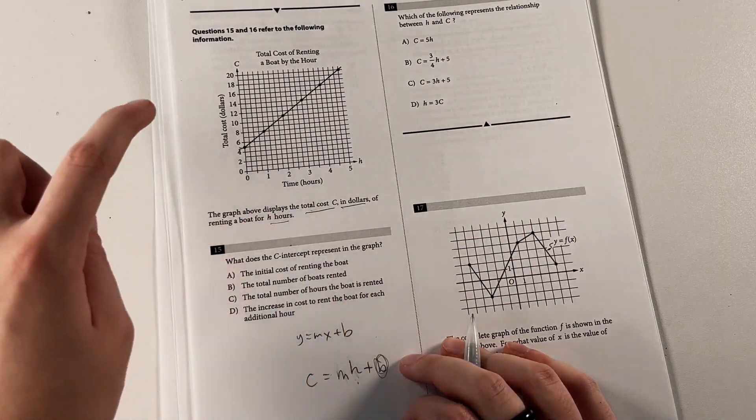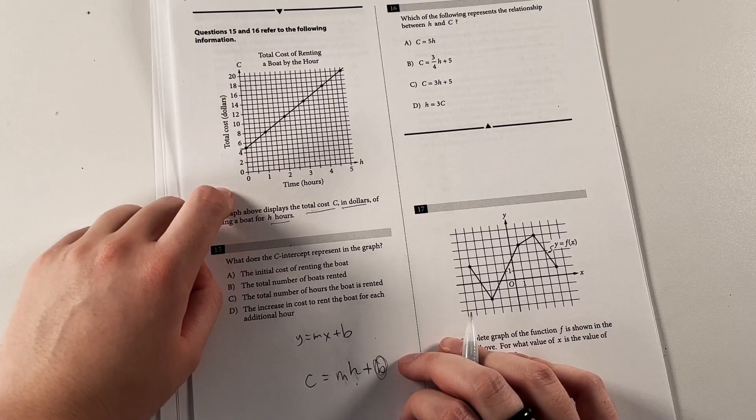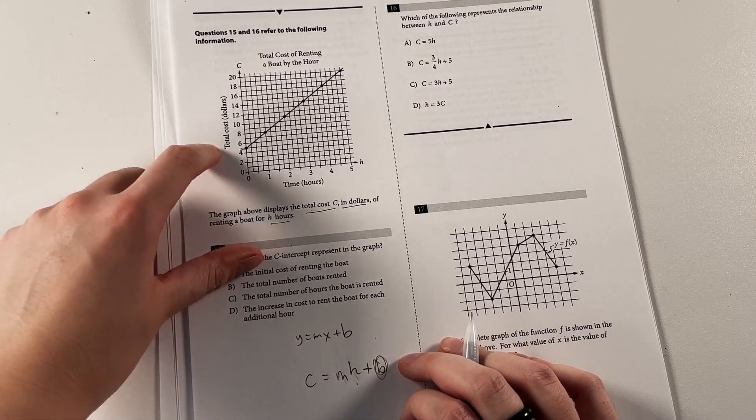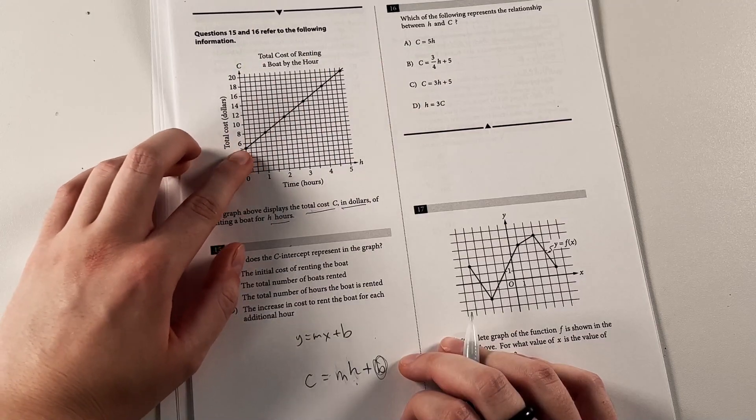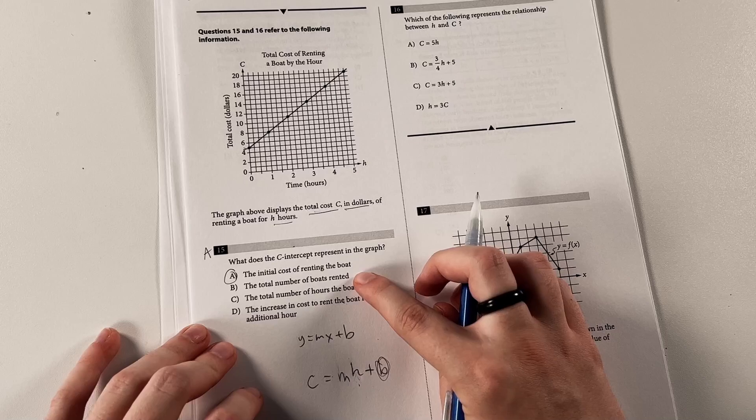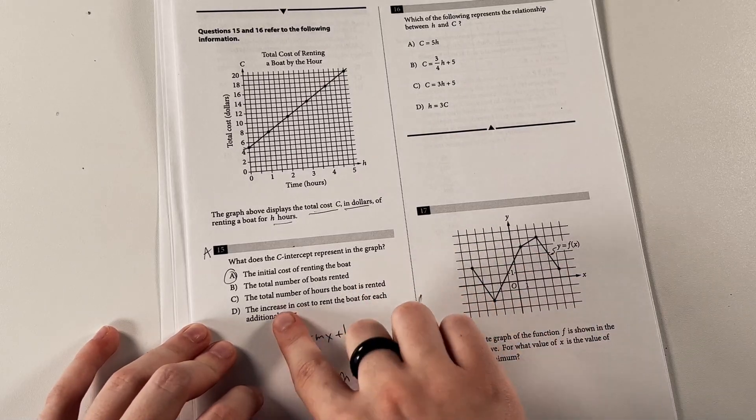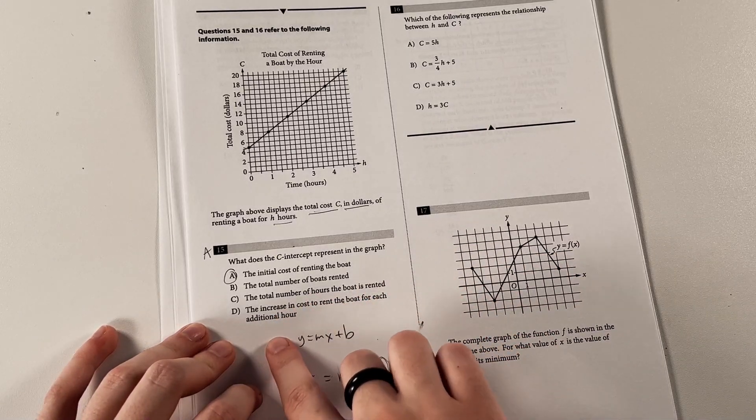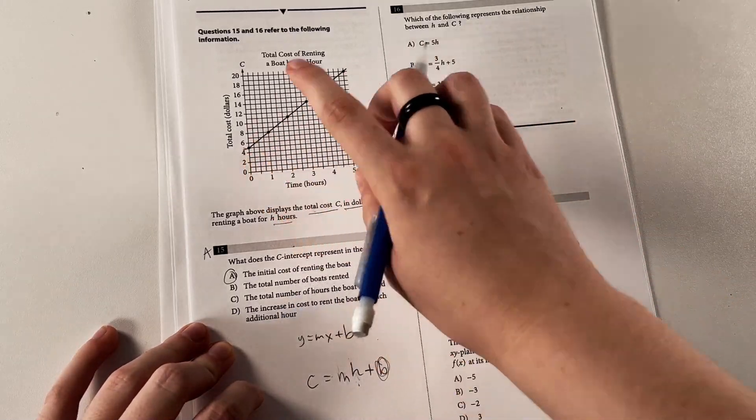And remember, that's always going to represent the initial amount of something. So in this case, the c-axis is the total cost in dollars, and then that's over time. So this is going to be the initial cost of renting a boat, so that's A. The c-axis doesn't represent the number of boats or the hours, and the increase in cost to rent the boat for each additional hour is going to be the slope of this line, not where we start from.